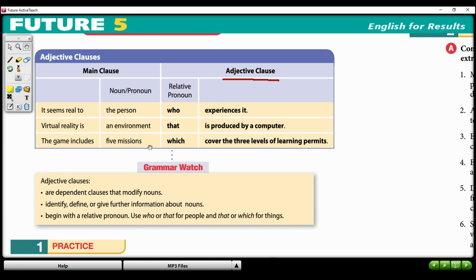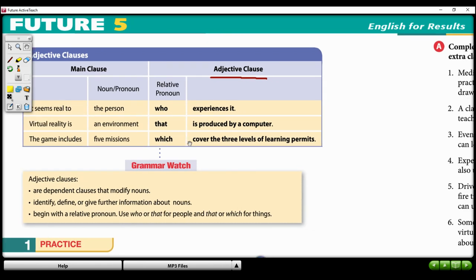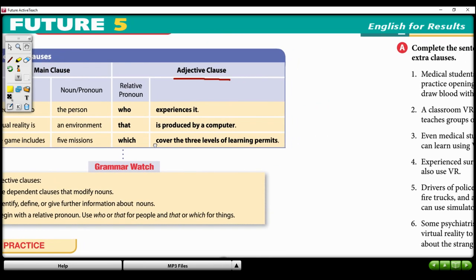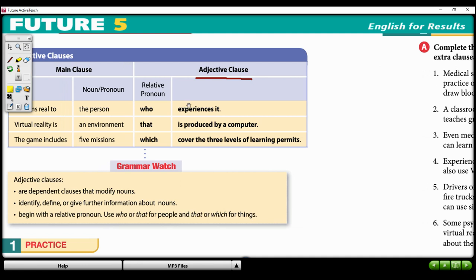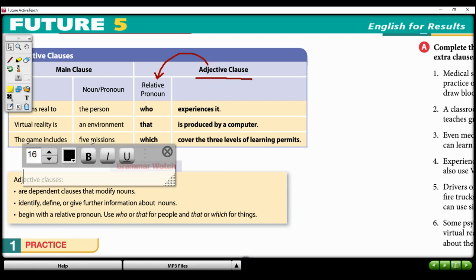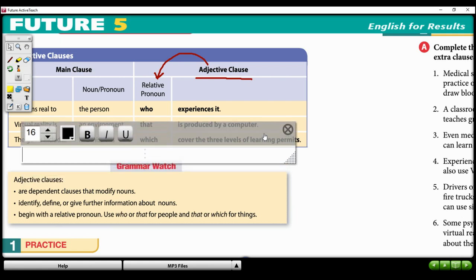And the game includes five missions. What kind of missions? Which cover three levels of learning permits. And so we have this adjective clause. And an adjective clause is introduced by a part of speech that we call a relative pronoun. And let me give you another example. This book uses who, that, and which. But I want to give you one more example here.